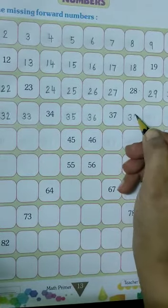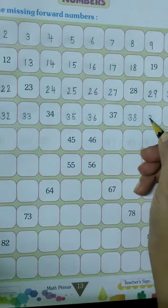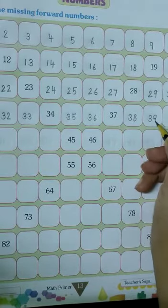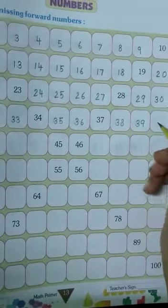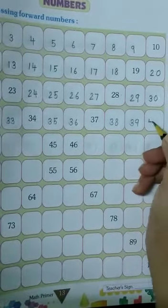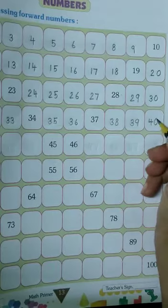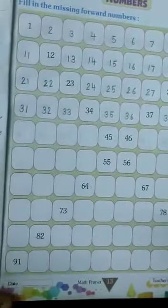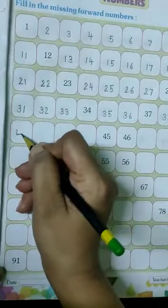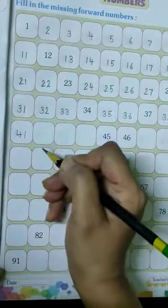write 38, 39, and after 39, write 40. Then write 41 in this box.